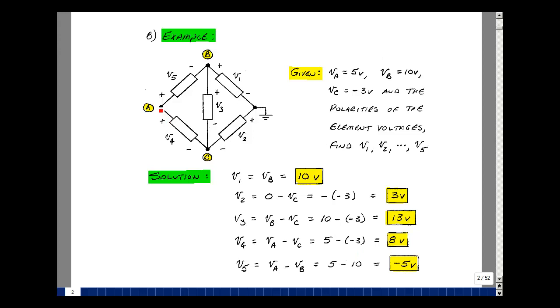Lastly, element voltage V5 is between nodes A and B, with the polarity shown. That's going to be V sub A minus V sub B. V sub A was five. V sub B was 10, so we get minus five. We can arbitrarily assign voltages across elements, and if we know the node voltages, we can solve for them. And again, some will be positive, some will be negative. That's the value. If you put a meter across it, you'd see a value of a plus or a minus voltage.